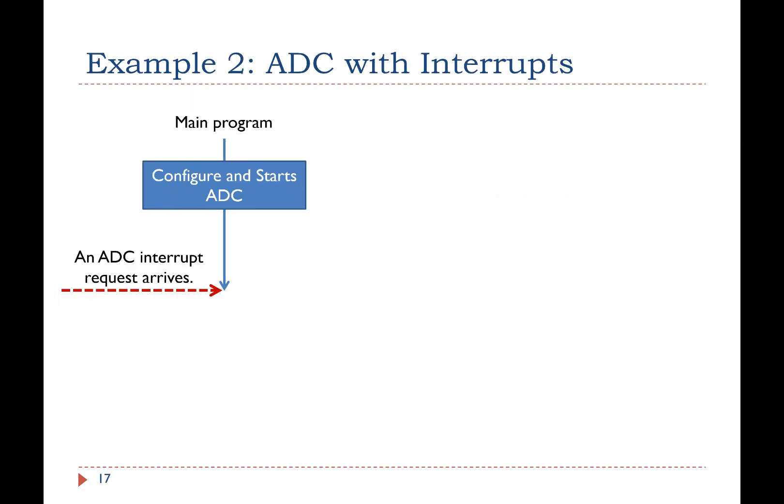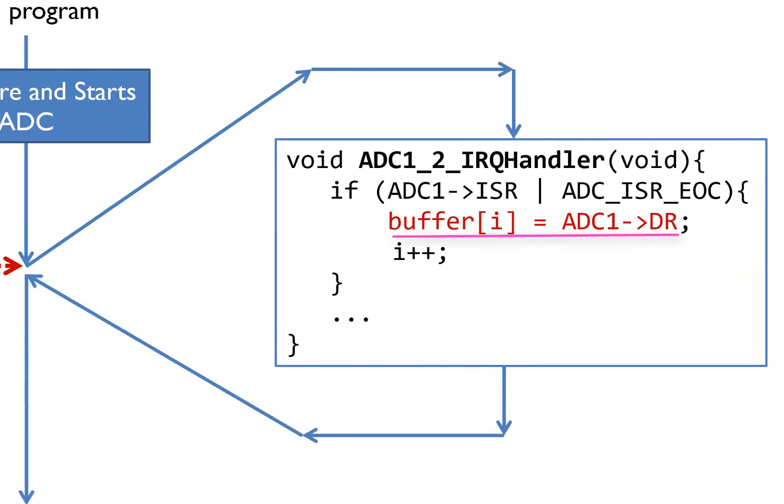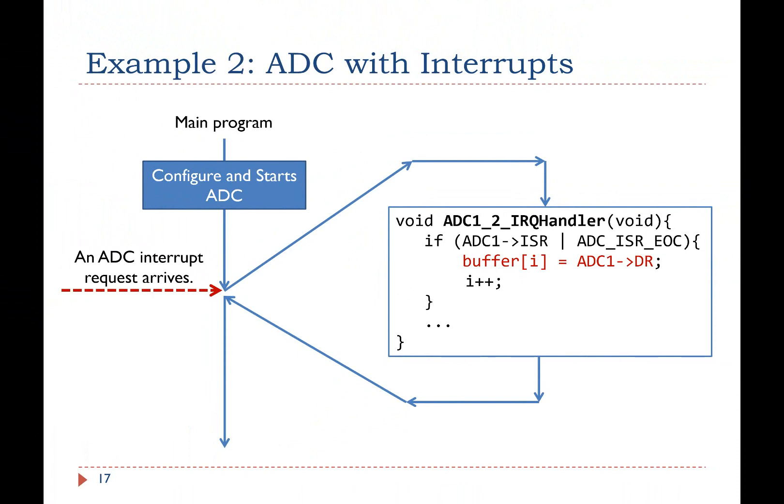The second example uses ADC interrupts to improve the efficiency. When a conversion completes, the ADC hardware generates an interrupt request if the ADC interrupt is enabled. Then the processor responds to the interrupt request and automatically executes the ADC interrupt handler. The ADC interrupt handler reads the ADC data register DR and saves it to a memory buffer for future calculation. Note that hardware automatically clears the EOC bit flag if the ADC data register DR is read. That's why software does not explicitly clear the EOC flag in the interrupt handler. Compared with busy waiting in the first example, the interrupt method is much more efficient because the processor is available to run other computation tasks during ADC conversions.